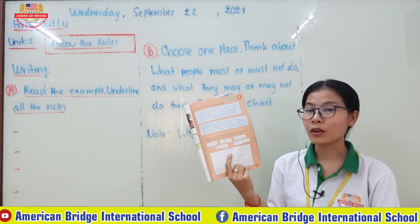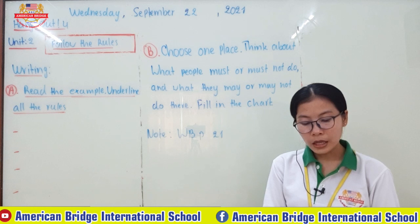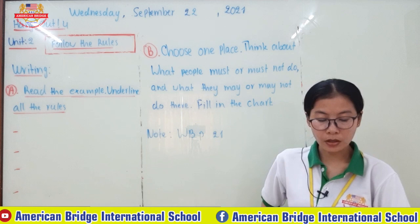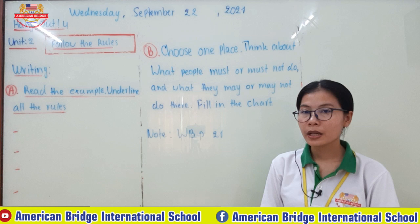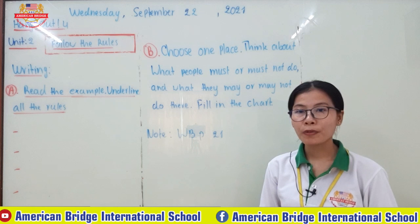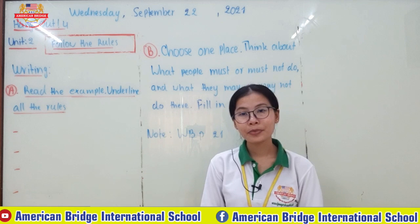Teacher hopes that you understand what a paragraph is. Look at our writing all together — you can see there are two texts, but actually it is just one writing. Read and find the rules, and after that you will go to part B. Teacher would like you to spend five minutes to read and underline, and then you can check with the teacher. Are you ready class? Let's start.